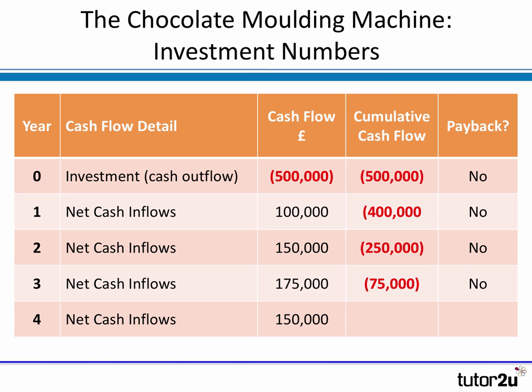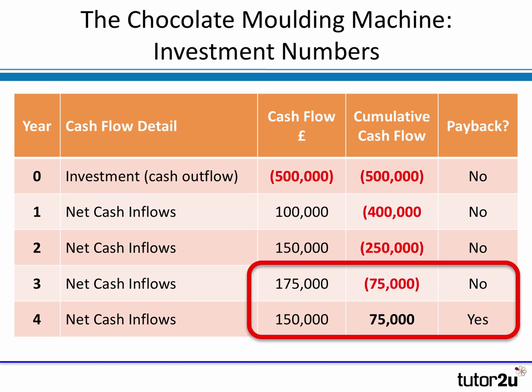So it looks like payback occurs at some stage in year four, because as we can see from year four, a net inflow during the year of £150,000 means that by the end of year four we have a positive running total — a positive cumulative cash flow of £75,000. So somewhere between the end of year three and the end of year four, payback was finally achieved.